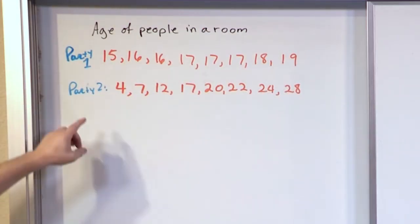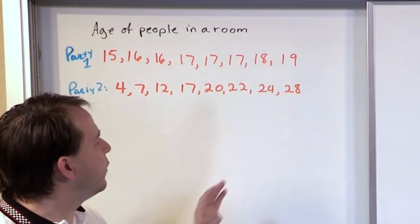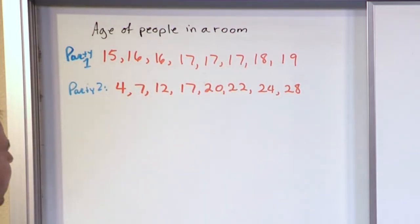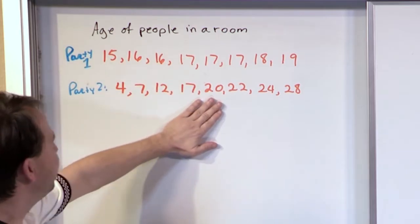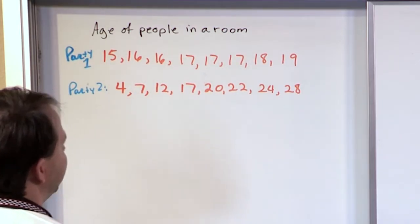Which one of these data sets from party 1 or party 2, notice I have 8 different people in each one of them. Which one of these parties do you think is more spread out? Well, to me it looks like number 2 is much more spread out because I have a much wider range of people that are attending that party.